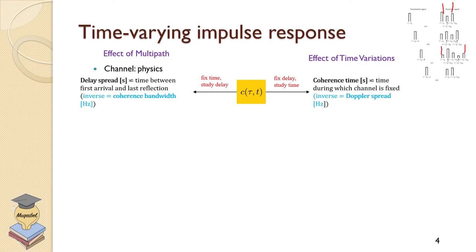Alternatively, if we fix the time delay and study the change with time, we talk about coherence time. Coherence means similarity — if coherence time is large, the channel does not change; if small, the channel changes frequently. It is the time during which the channel is fixed, and it is the inverse of the Doppler spread. So we have delay spread as a measure of multi-path components, and coherence time as the measure of time variation impact.